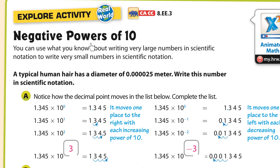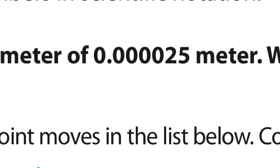We are looking at negative powers of 10. You can use what you know about writing very large numbers in scientific notation to write very small numbers in scientific notation. Here we go — a typical human hair has a diameter that is super small. Write this number in scientific notation. Like we did before with large numbers, we will create a number greater than or equal to 1 and smaller than 10 using a decimal.